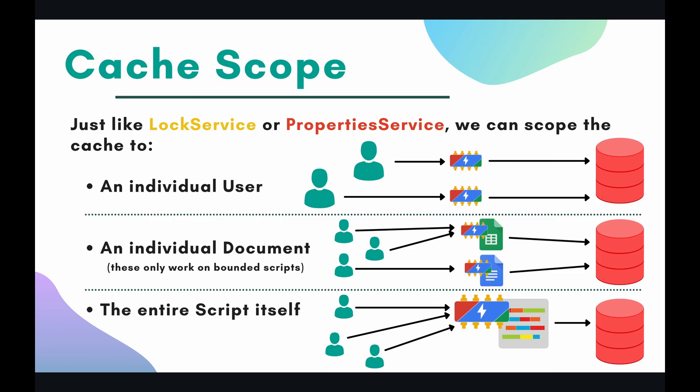Next we have an individual document. You can also scope your cache to an individual document at a document level. These actually only work for bounded scripts, so you won't be able to access a document-scoped cache in a standalone script. But let's say you have a bounded script, and for some reason it's accessing multiple different documents. Then you can contain the data that lives on that cache to just the document itself, so that whenever users access that document they'll have a shared cache, but they won't be able to access that same data if they go to a different document.